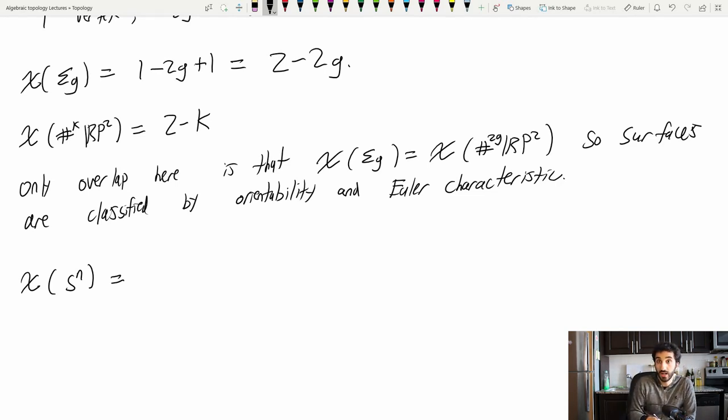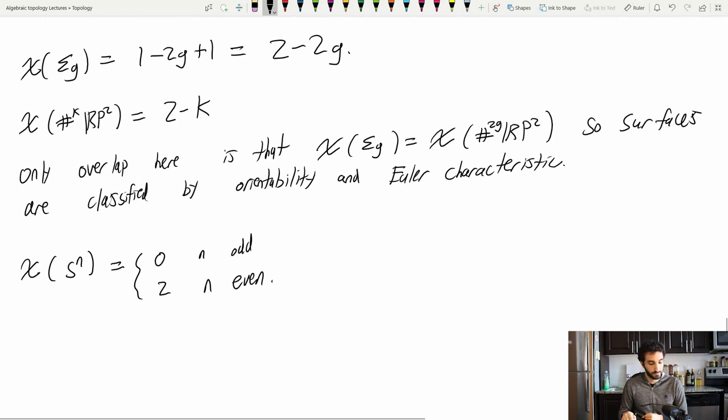So it's equal to either, either n was odd, in which case I'm supposed to subtract off that n cell. So zero if n is odd and two if n is even. So all these calculations happen super quick, and they give you a nice little invariant of CW complexes.